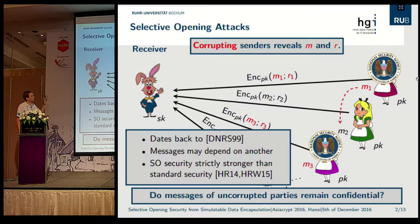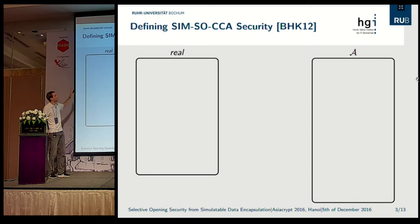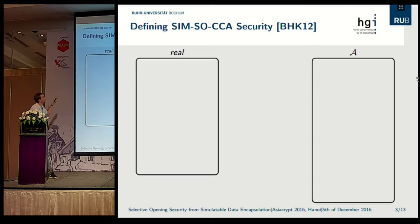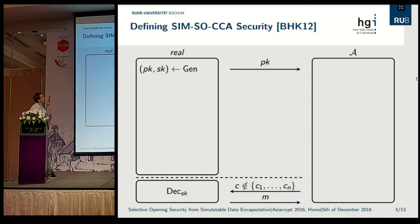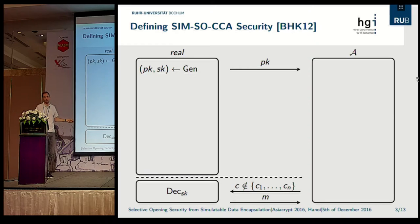Let's turn the scenario into a proper security definition using the real-ideal paradigm. On the left hand side there will be the real game, on the right hand side the adversary. The real game will generate a public key and secret key pair, and give the public key to the adversary. We are interested in active attacks, meaning the adversary will have access to a decryption oracle with the usual restrictions.